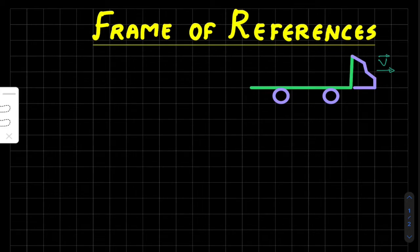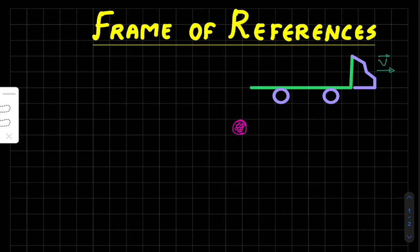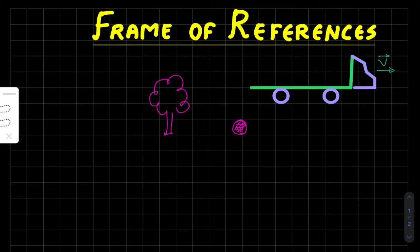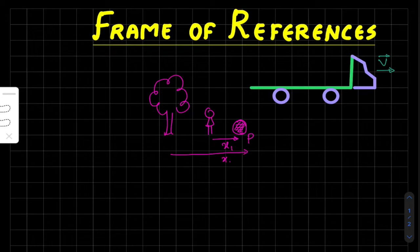Whenever we want to specify the position of an object, let's say we have an object here and we want to specify its position — how far it is. To describe the position of this particle we need to specify another observer. For example, we need to specify its position from your house, from a nearest tree, from the road. It means that its position is relative. Let's say we have a tree here and a person here, so the position of this object is relative — from the person it is x1 distance away and from the tree it is x2 distance away.